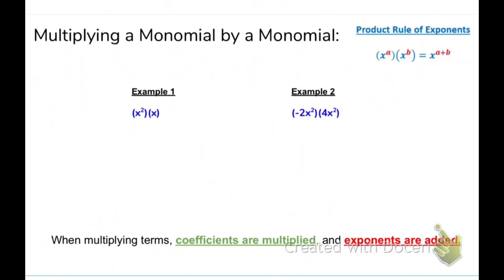Now let's look at this example and we're going to keep in mind the product rule of exponents, which says when we have the same base — same variables — we copy the base and we add the exponents. So when we multiply terms, coefficients are multiplied and the exponents of the variables are added.